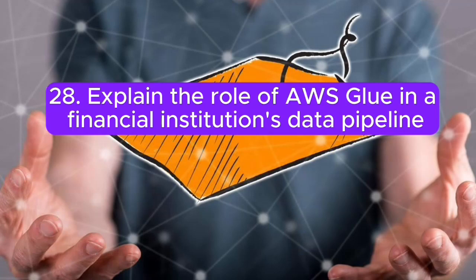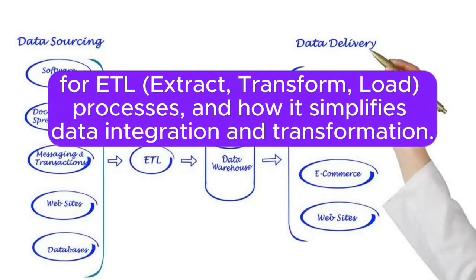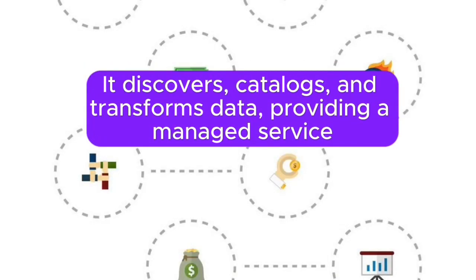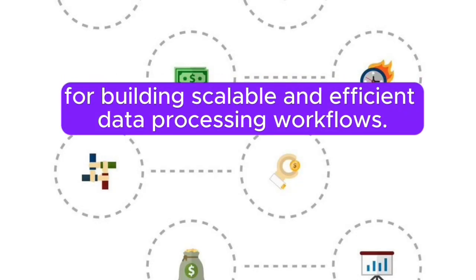Question 28: Explain the role of AWS Glue in a financial institution's data pipeline for ETL (extract, transform, load) processes, and how it simplifies data integration and transformation. Answer: AWS Glue simplifies ETL processes in a financial institution's data pipeline by automating data integration and transformation. It discovers, catalogs, and transforms data, providing a managed service for building scalable and efficient data processing workflows.